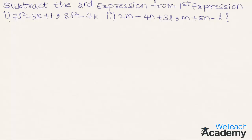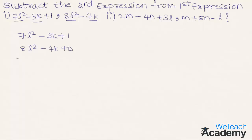Now let us write the two expressions one below the other such that the like terms appear in the same column. So we get 7l² minus 3k plus 1, and the second expression as 8l² minus 4k. As we don't have a constant term in the second expression, let us write 0. Now let us subtract: the additive inverse of plus 8l² is minus 8l², and the additive inverse of minus 4k is plus 4k.